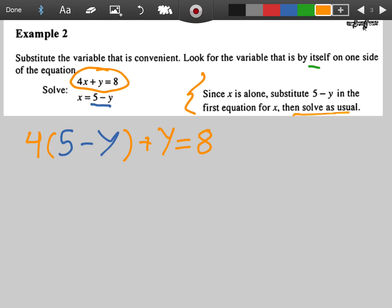And then when it says solve as usual, just do what you can to isolate y. So let's distribute the 4. We've seen that before. 4 times 5 gets us 20. 4 times negative y gets us negative 4y. Then we're adding on that y. This all equals 8. We can simplify our y terms here. Keep the 20. Negative 4y plus y gets you negative 3y. This equals 8.